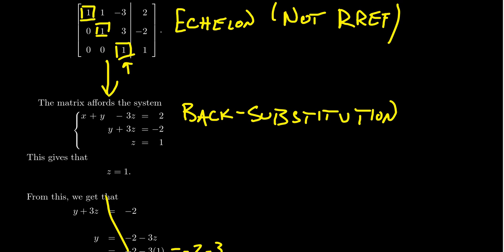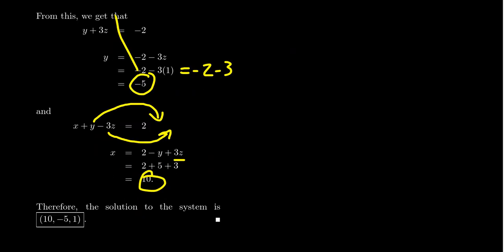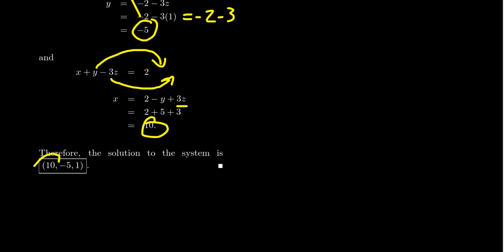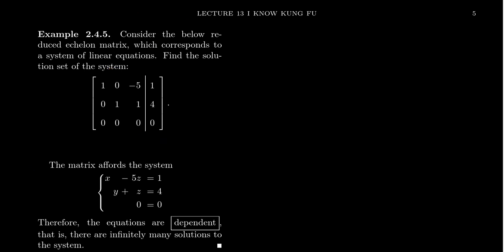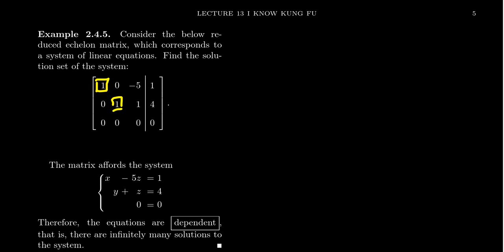This was an example of a linear system with a unique solution — consistent and independent. What about the other cases? Consider the following augmented matrix: [1, 0, −5 | 1], [0, 1, 1 | 5], [0, 0, 0 | 0]. This matrix is in row-reduced echelon form (RREF): the leading ones form a downward staircase, the row of zeros is at the bottom, the pivots are ones, and there are zeros above and below all of them.